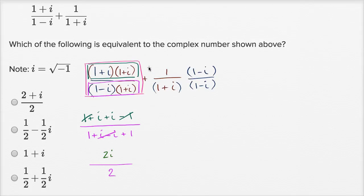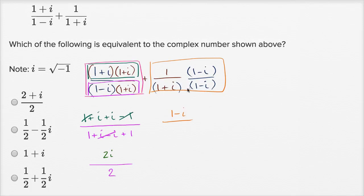Now for the second fraction: the numerator is 1 times (1-i), which is just (1-i). And the denominator, (1+i)(1-i), we just figured out simplifies to two. So the second fraction becomes (1-i)/2.